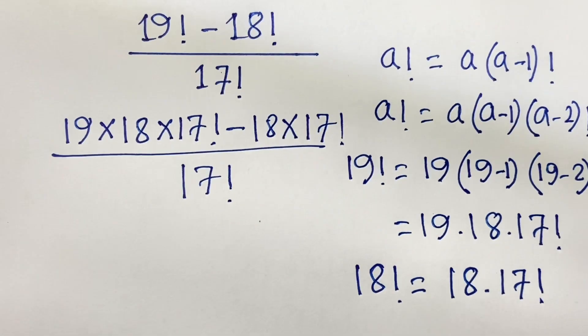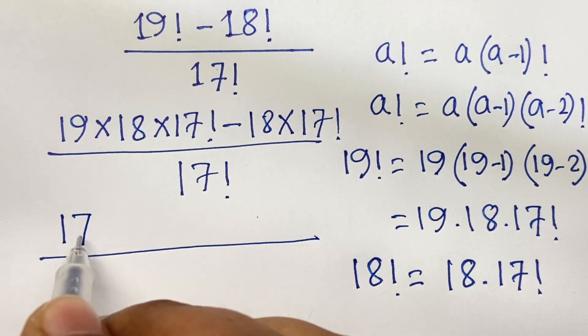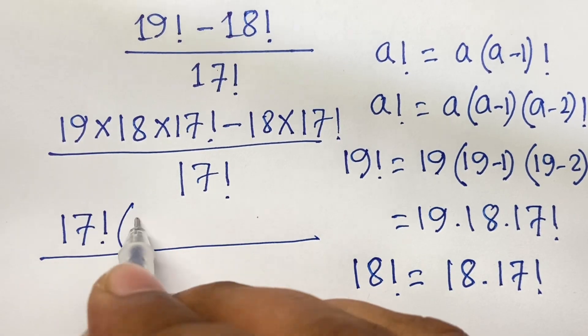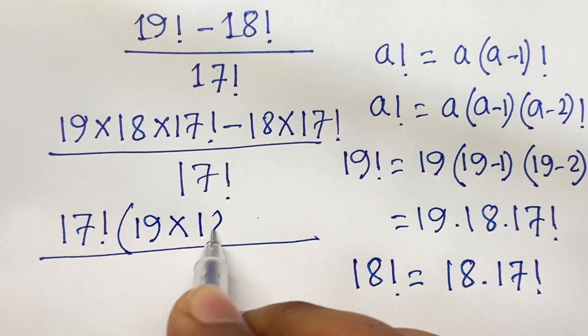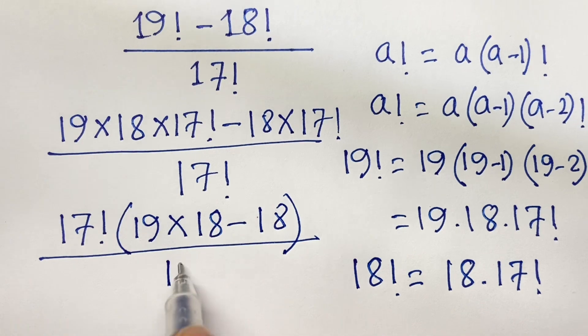Now I can say 17 factorial is common. So here is 19 times 18 minus 18, over 17 factorial.